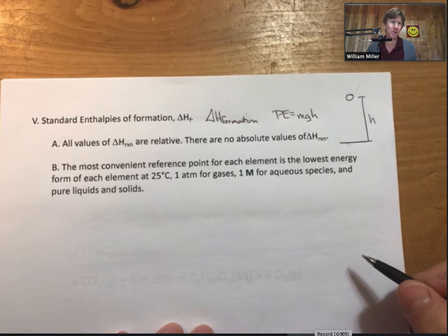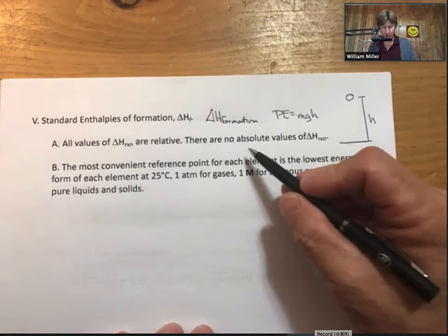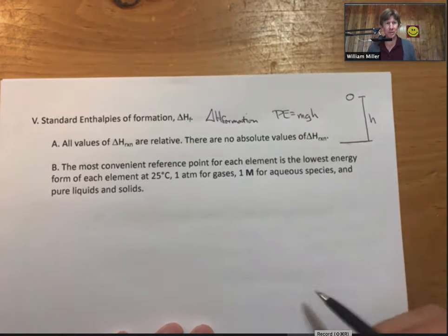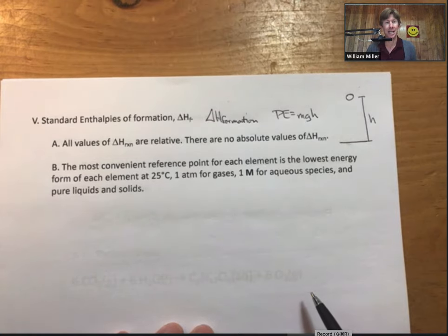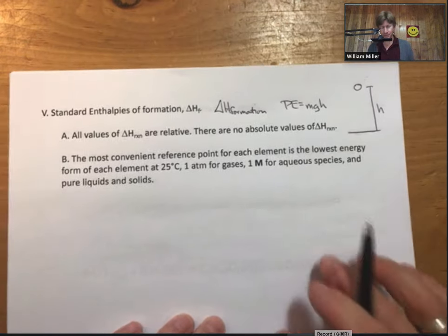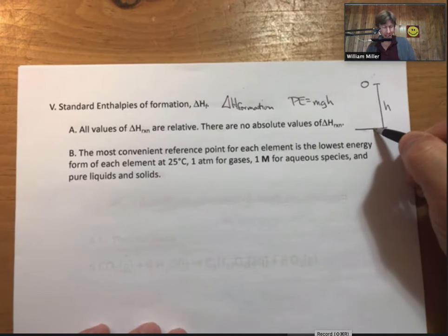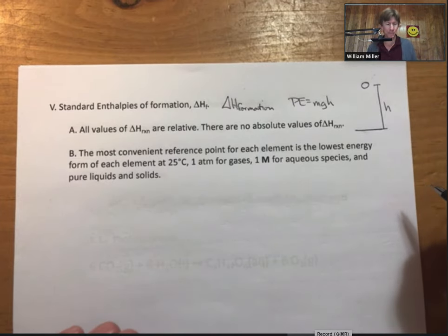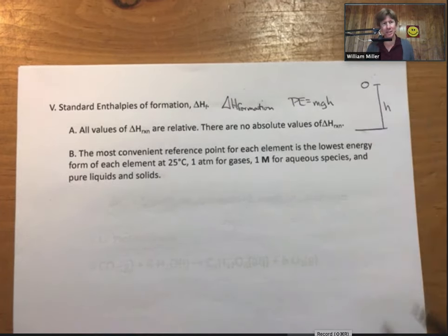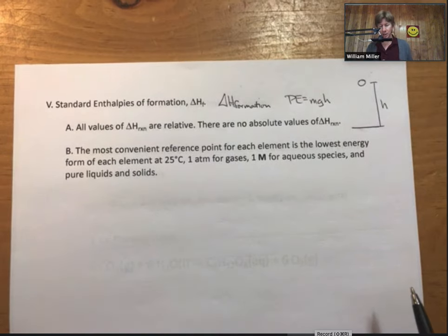Well, I don't know if that's a complete justification for the idea that there are no absolute values of Delta H reaction. However, that's what we're going to use. So, what we do, like when we have a ball above a floor, and we call this height equal to a distance of zero, then we can measure things relative to that. We will also define a zero for Delta H. And each element gets its own zero.